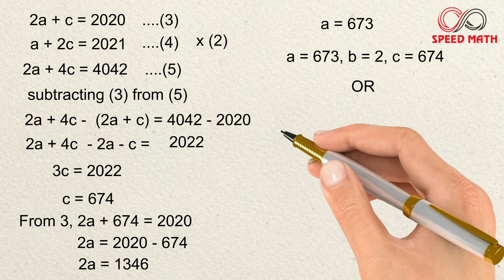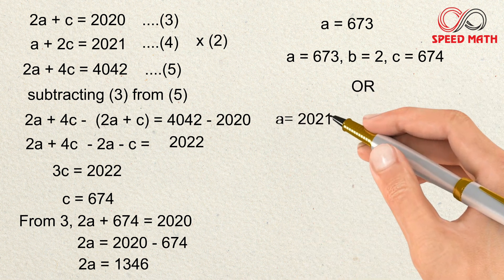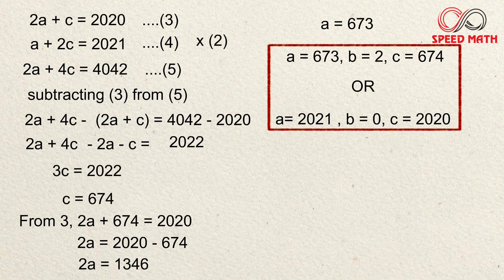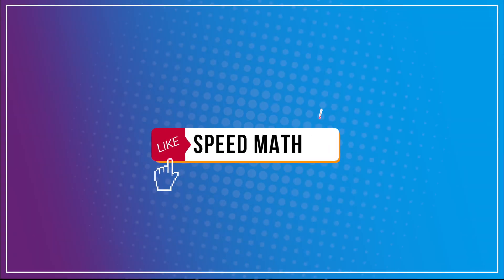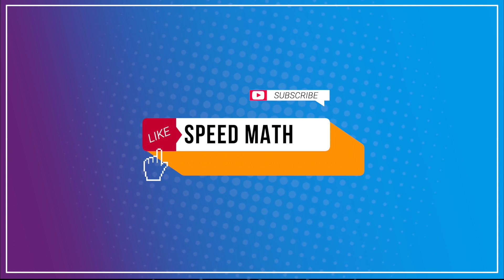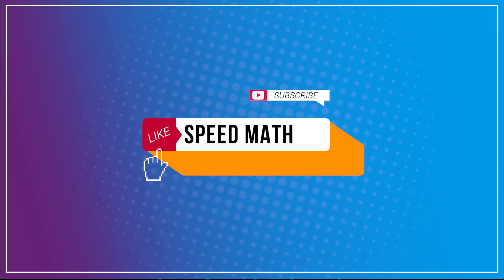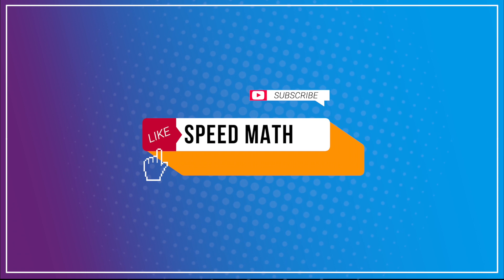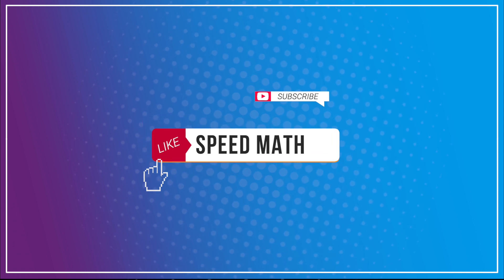So the two solutions are: a = 673, b = 2, c = 674, and a = 2021, b = 0, c = 2020. Isn't it a fantastic question! If you want more such Olympiad questions, do comment in the comment section, hit the like button, and subscribe. I'll come up with more such questions — till then, see you, thank you so much for watching.